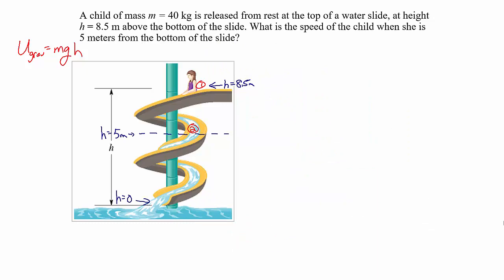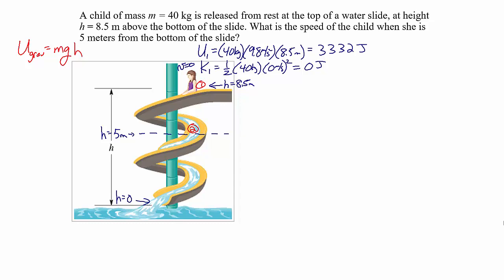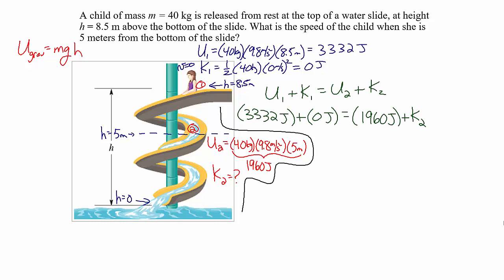Now with the same child on the slide, instead of looking for the speed at the bottom, let's find the speed when the child is 5 meters from the bottom. This is a case where the child is partway down and has both potential and kinetic energy. At point 1 the potential energy is still 3,332 joules and the kinetic energy is still zero, since she started from rest. At point 2 — at a height of 5 meters — the potential energy is 40 × 9.8 × 5 = 1,960 joules. The total energy must still add up to the original mechanical energy.